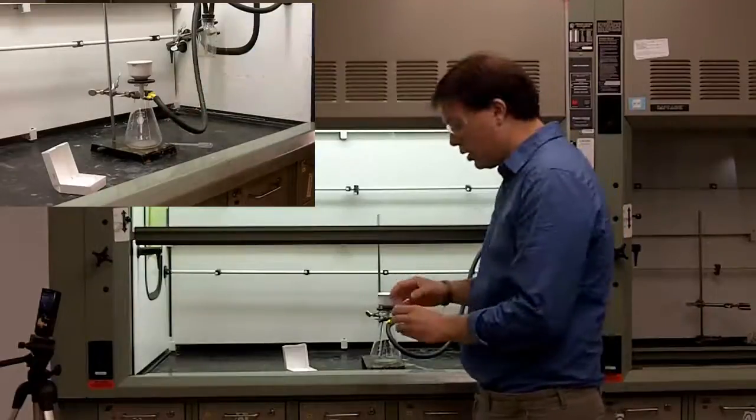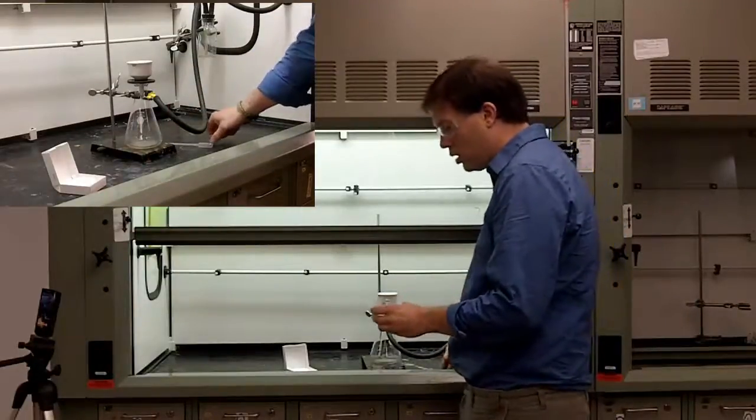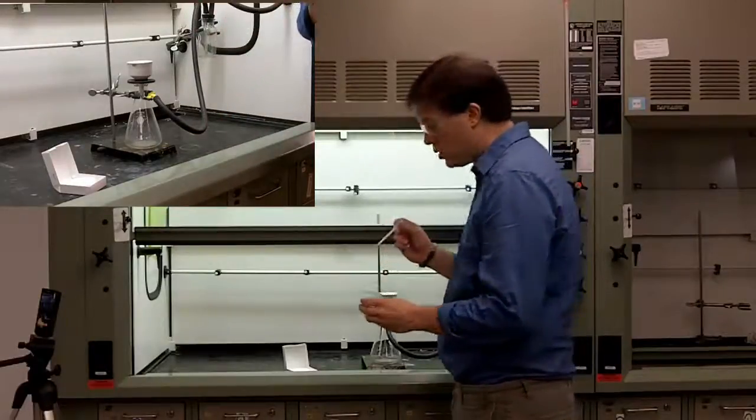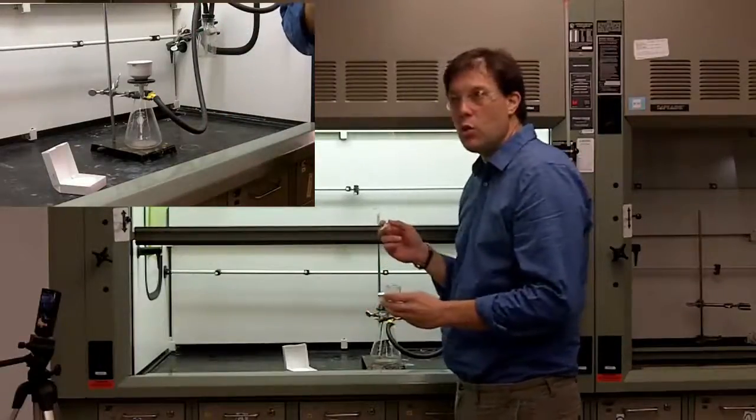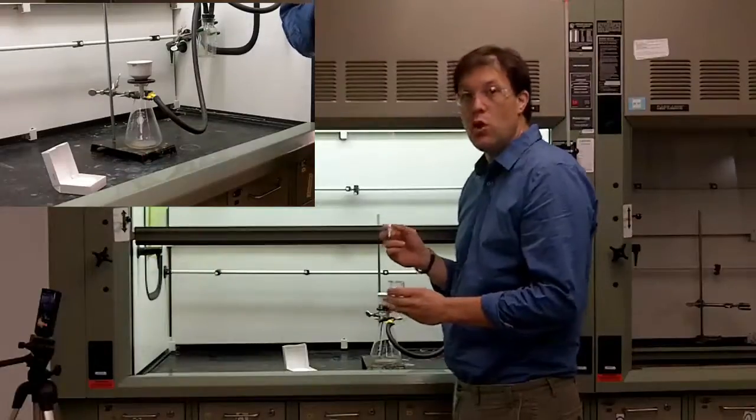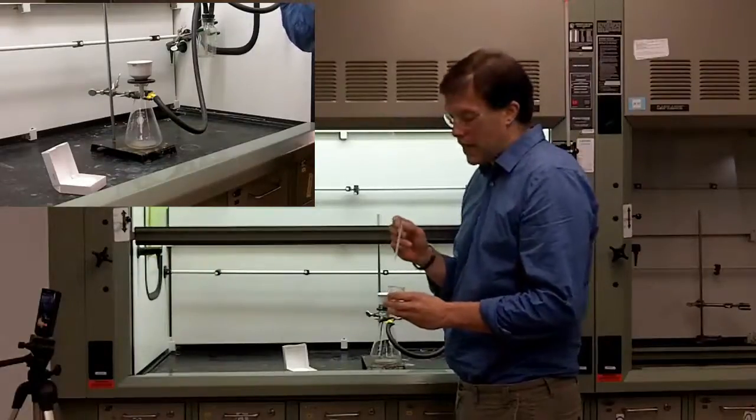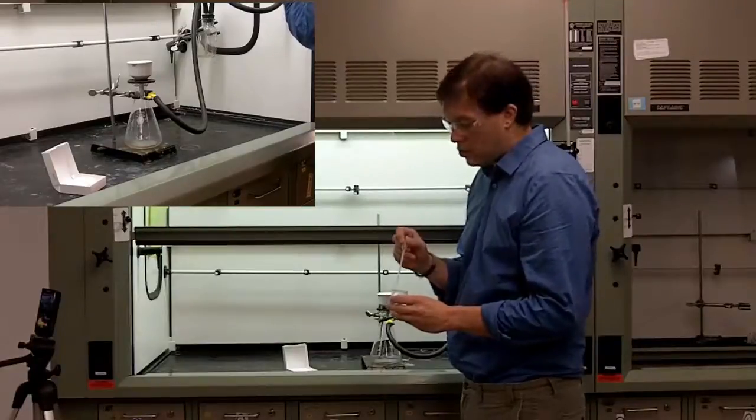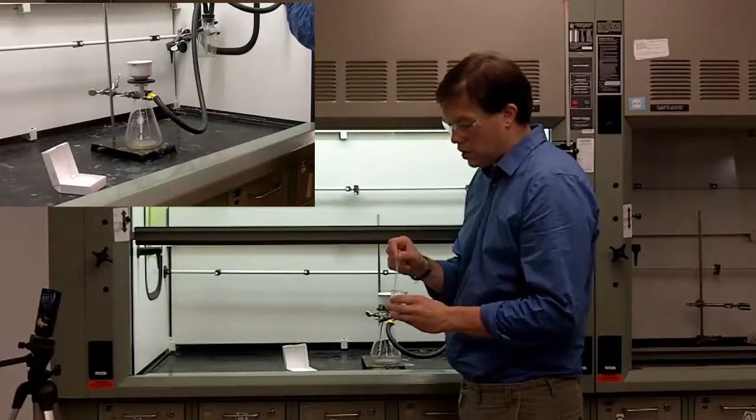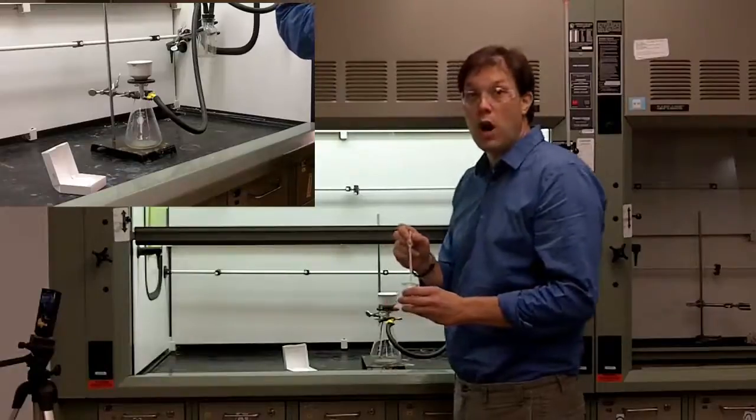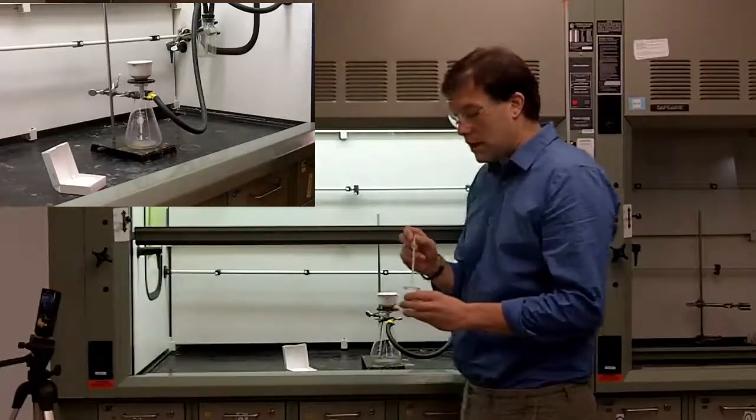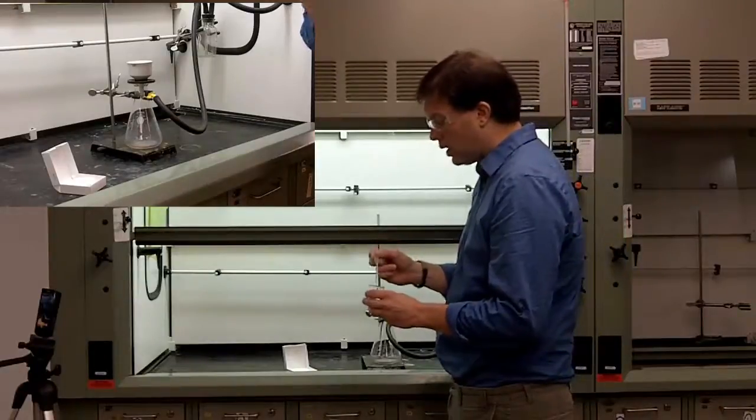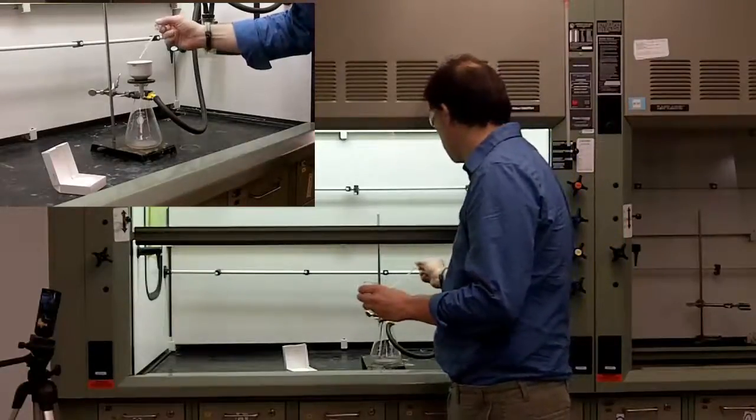So the last thing to do before pouring our sample onto the suction filtration is wetting the paper if you choose to do that. Now if you choose to wet the paper, make sure you only use the solvent that you are filtering your product out of. Anything else, and you may run into solubility issues. Many students just try and use water all of the time, but if your product is soluble in water, it will actually dissolve it because it doesn't all get sucked away before you put your sample in.